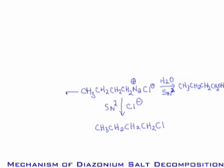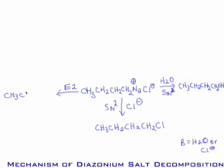While both of these nucleophiles are weak, primary systems tend to go SN2. Lastly, we note that water or Cl- — both very weak bases — could get E2 elimination. If H2O collides with a proton and N2 gets kicked out, we'd form 1-butene.